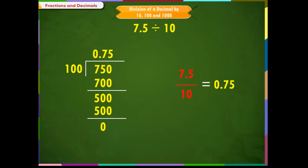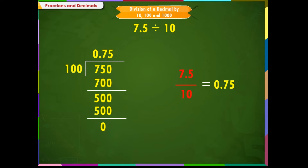What we observe in the result of this problem is that the digits of the decimal number remain the same, but the decimal point in the result is shifted to the left by one place, as the divisor 10 has only one zero.